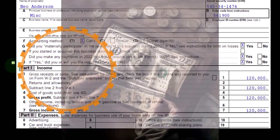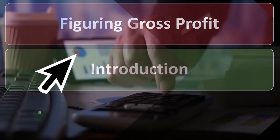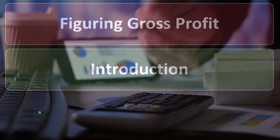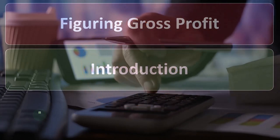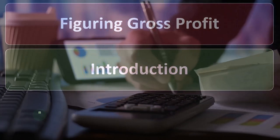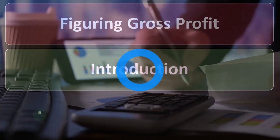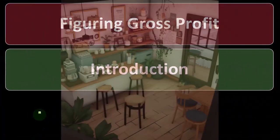Now we're going to be focusing on figuring the gross profit. Remembering that Schedule C is in essence an income statement: if you're dealing with a non-manufacturing company or one that doesn't deal with inventories, then it's going to be a simpler calculation — more of a one-step income statement where you have income minus expenses. But if you have a manufacturing company or one that purchases and sells inventory, a merchandising type of company, then you have to deal with inventory.